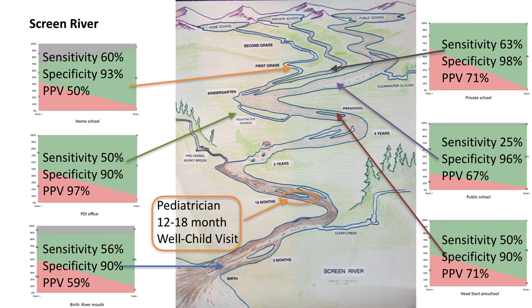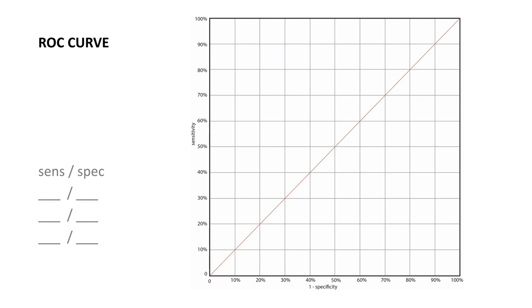This would be an example of pediatricians using the 12-18 month well-child visit. Not every child is seen in a pediatrician's office. Not only where you do the screening, but how effective the screening tool is, are both important parts of validation.